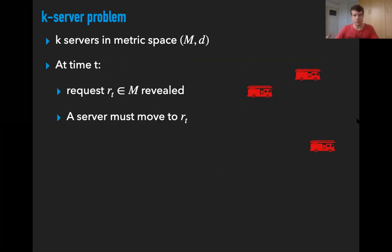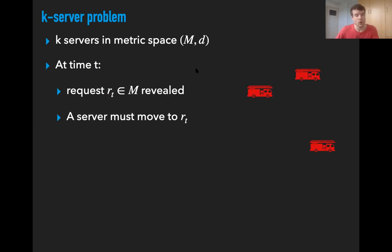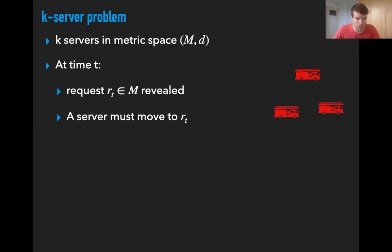In the k-server problem, we are given a metric space, which I will denote by M with distance function d. There are k servers located in this metric space — in this example, the servers are these fire engines. At any discrete point in time, we receive a request at some point r_t of the metric space, and then we have to select one of our servers to move to the request. After we've done this, we receive the next request, and again we have to select one of the servers to move to the request, and so on. The goal is to minimize the cost, which is defined as the total distance traveled by all the servers.